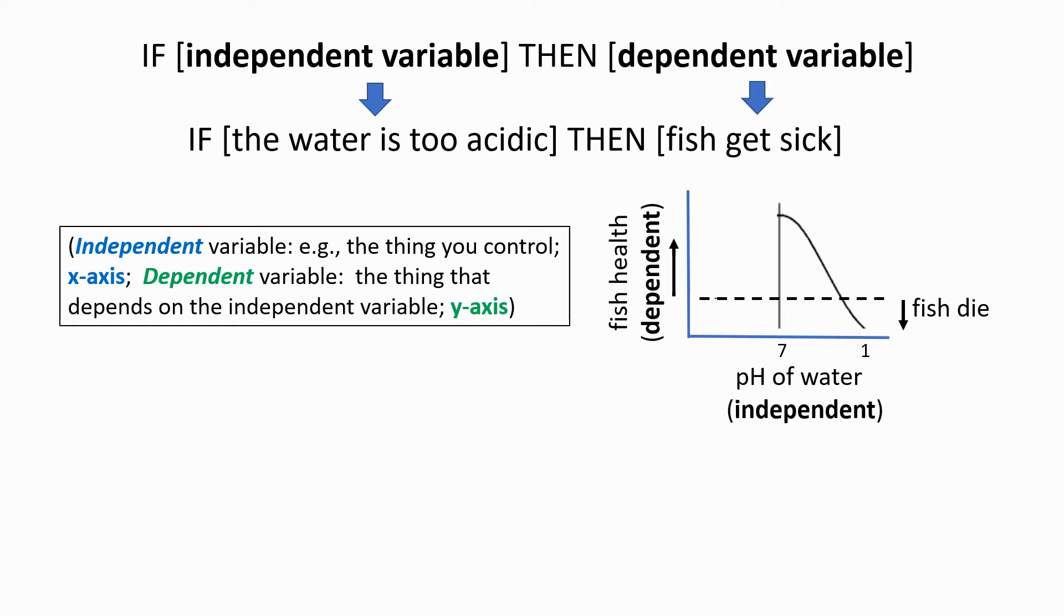And you can see that indeed, as the pH varies from neutral, 7, down to acidic, which is 1, the health of the fish declines until at some point they die. This relationship, then, is valid, but it doesn't explain anything, and you can test it directly.